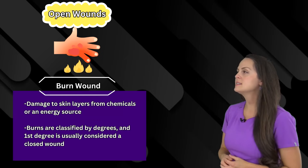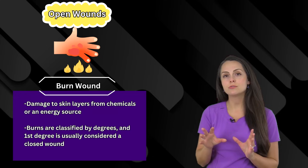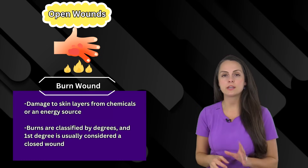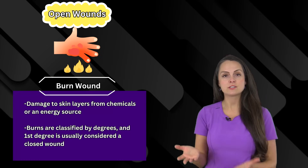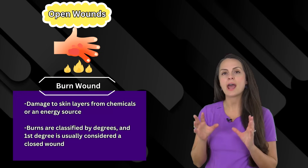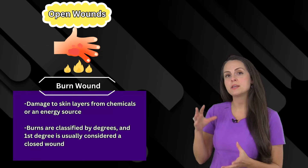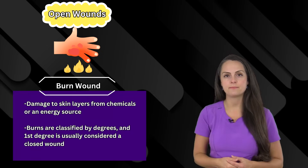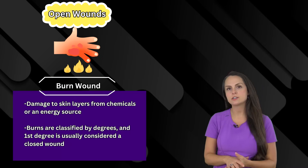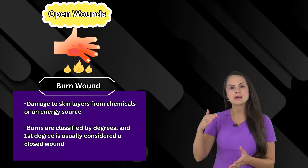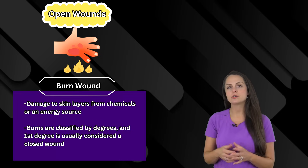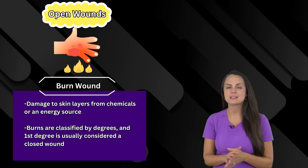Then we have burns — a type of skin wound where we have damage to the skin layers from some type of energy source such as heat or chemicals. Burns are categorized into degrees, which depends on how much that energy source penetrated the specific layer of skin. One important thing to know is that first degree burns are considered closed wound burns because the skin is intact, but second, third, and fourth degree burns are considered open wounds because the skin is no longer intact.